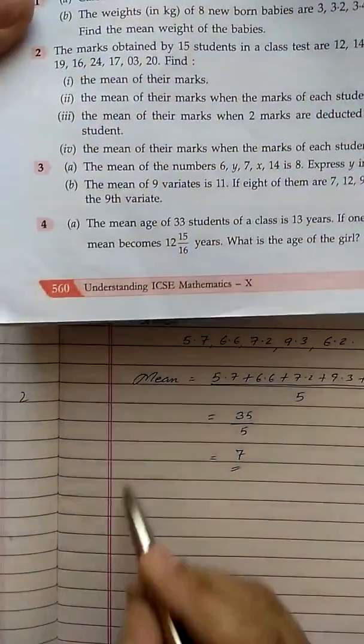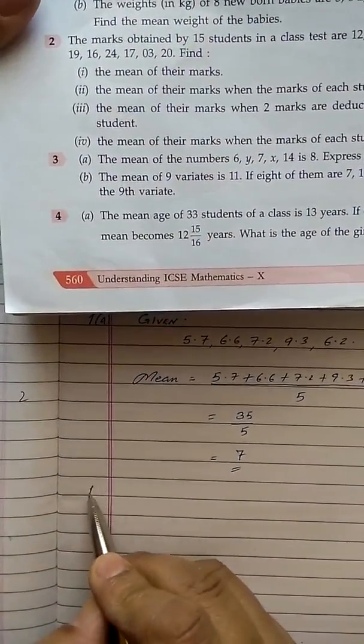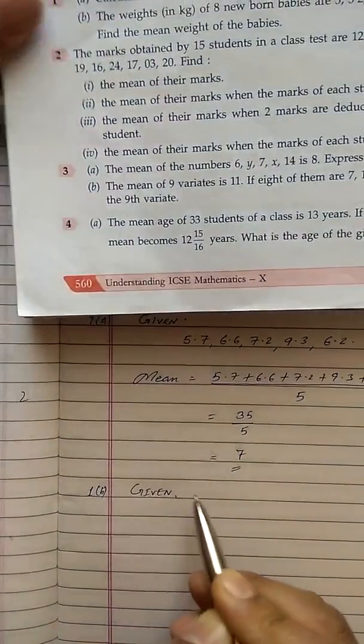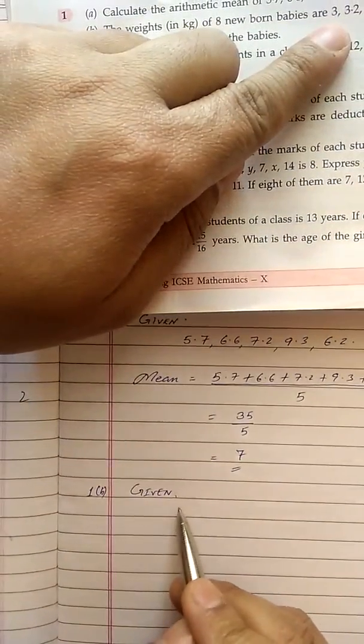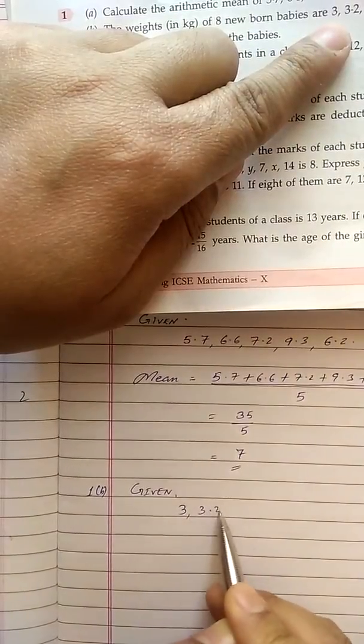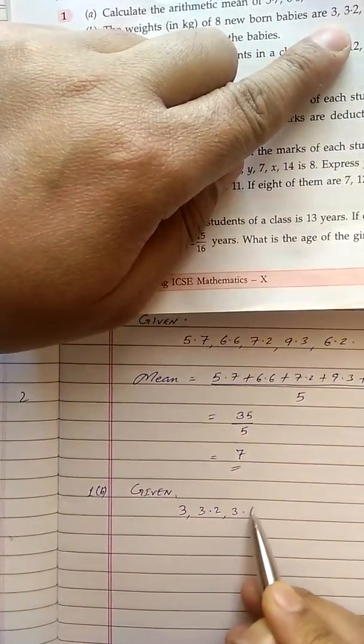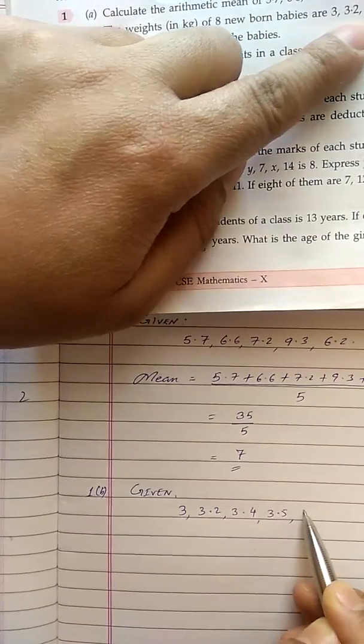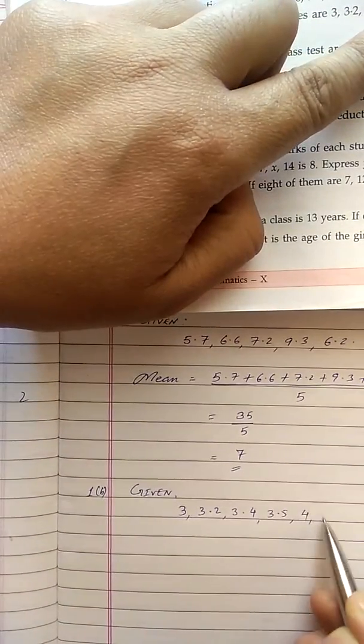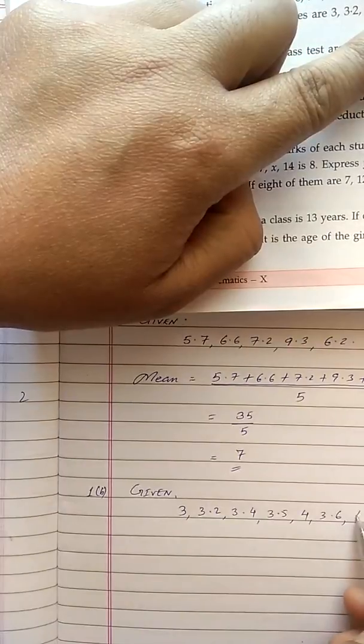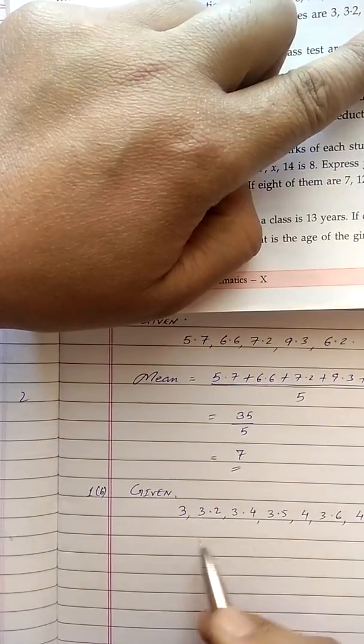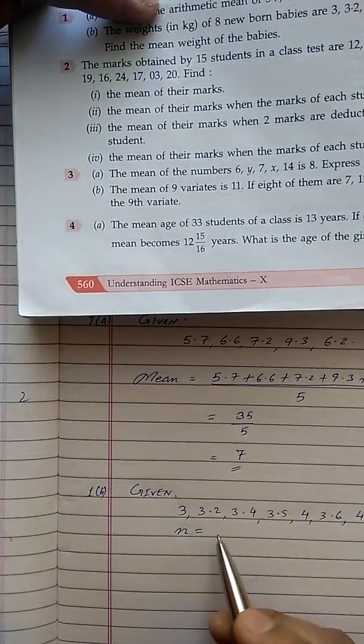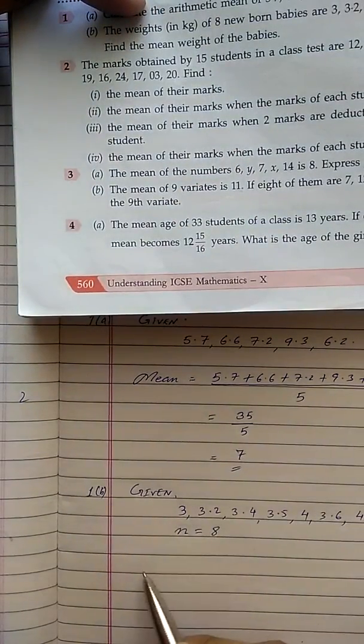First we will again write down what is given to us in the question. We will write down all the variants: 3, 3.2, 3.4, 3.5, then 4, 3.6, 4.1 and 3.2, and the number of variants, that is the value of n, is 8.